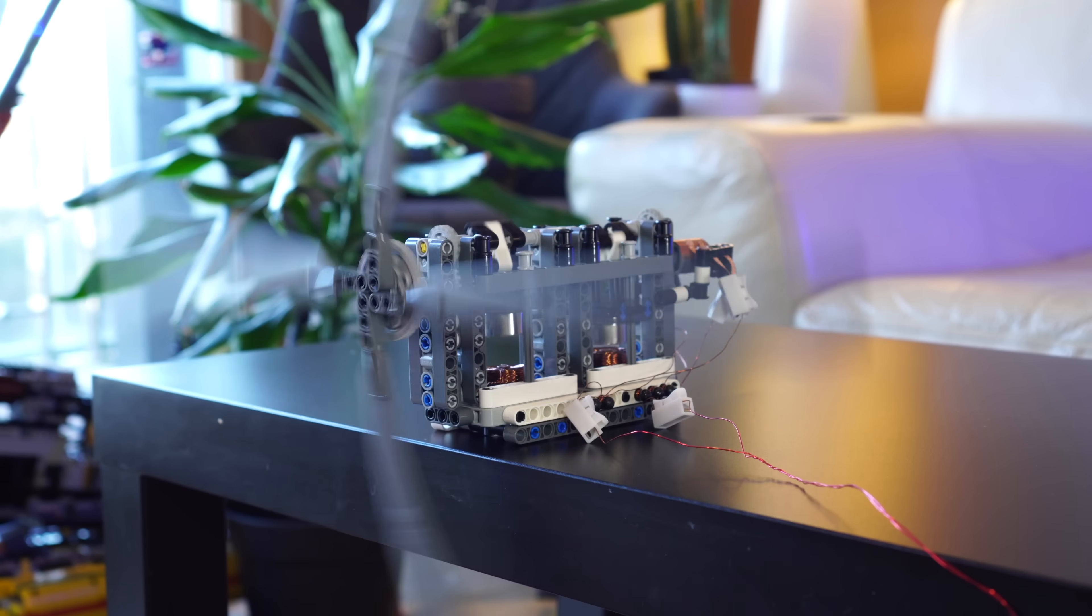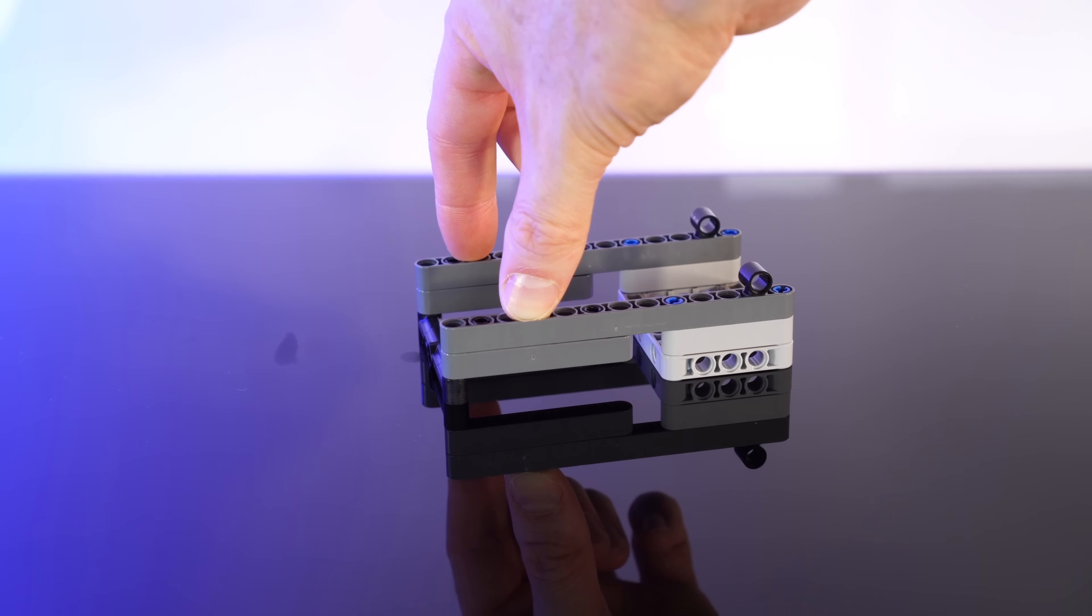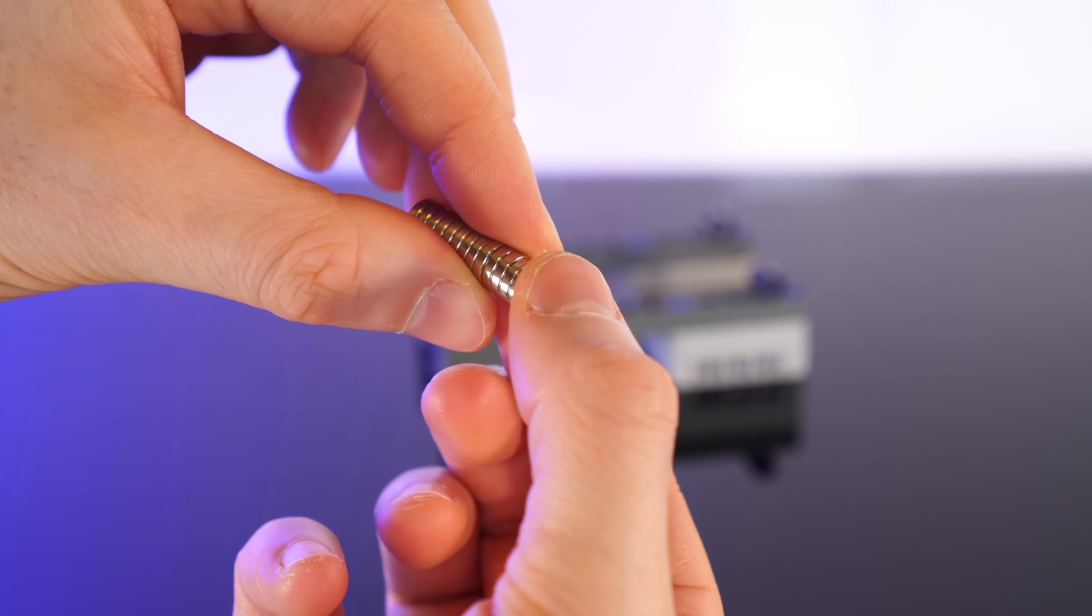And then when we remove the power, it free wheels for a while. Okay, great. Now we know we have an engine that can actually do some real work. So now, it's time to make a magnetic clutch.